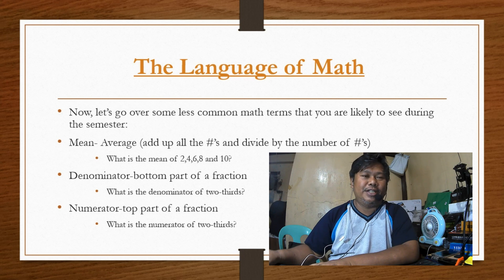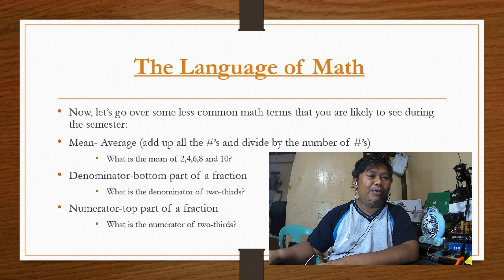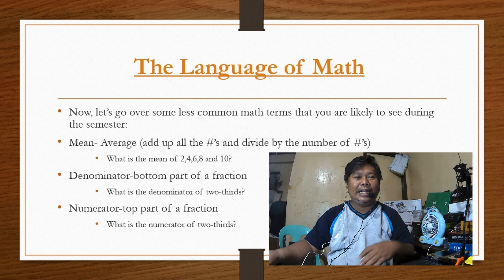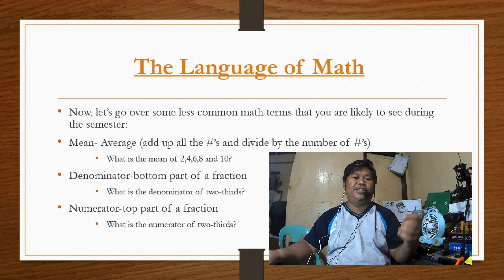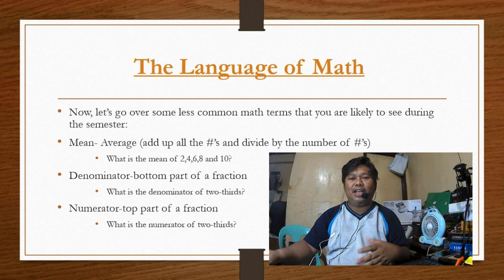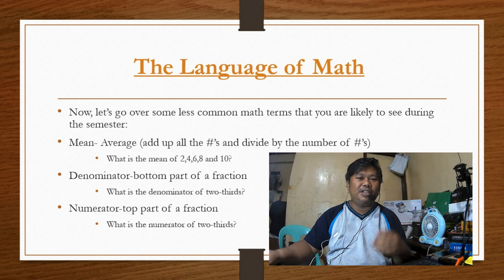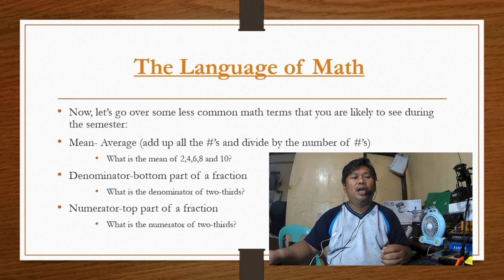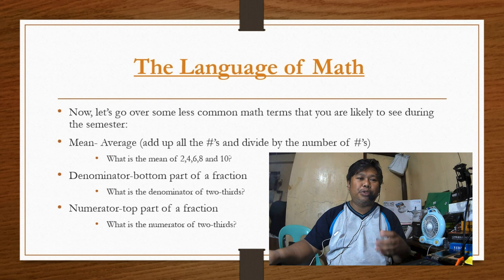Now let's go over some less common math terms you're likely to see during your school years. We have mean, denominator, and numerator. Mean is actually the average — add up all the numbers and divide by the count. For example, what is the mean of 2, 4, 6, 8, and 10? When you add them up, it's 30.